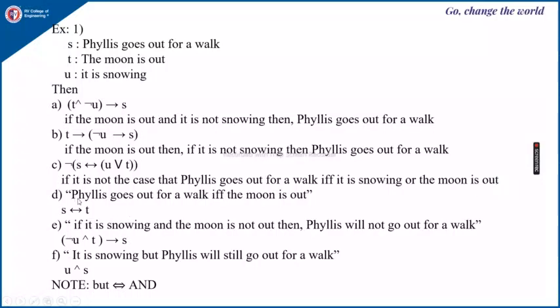Next, you are given the sentence and you have to write the statement. The given English statement will be: Phyllis goes out for a walk if and only if the moon is out. So here S if and only if T, because S represents Phyllis goes out for a walk and T represents the moon is out.